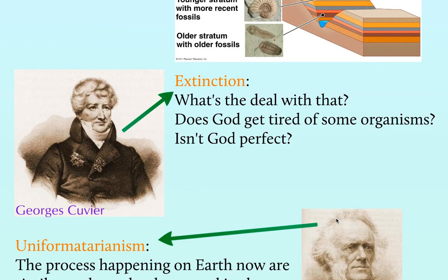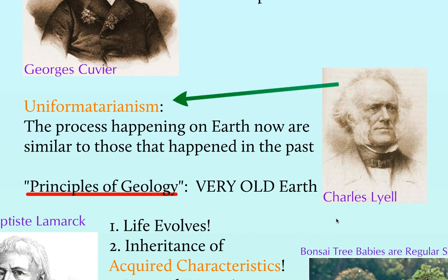Lyell is the one that talks about uniformitarianism — the idea that processes happening on Earth today, things we can see happening now, have probably been happening all along. He's got this idea about how geology and the planet are changing, and his idea is that the planet is in fact extremely old, older than anything scientists up to that point had thought. And again, this works into Darwin's theories.